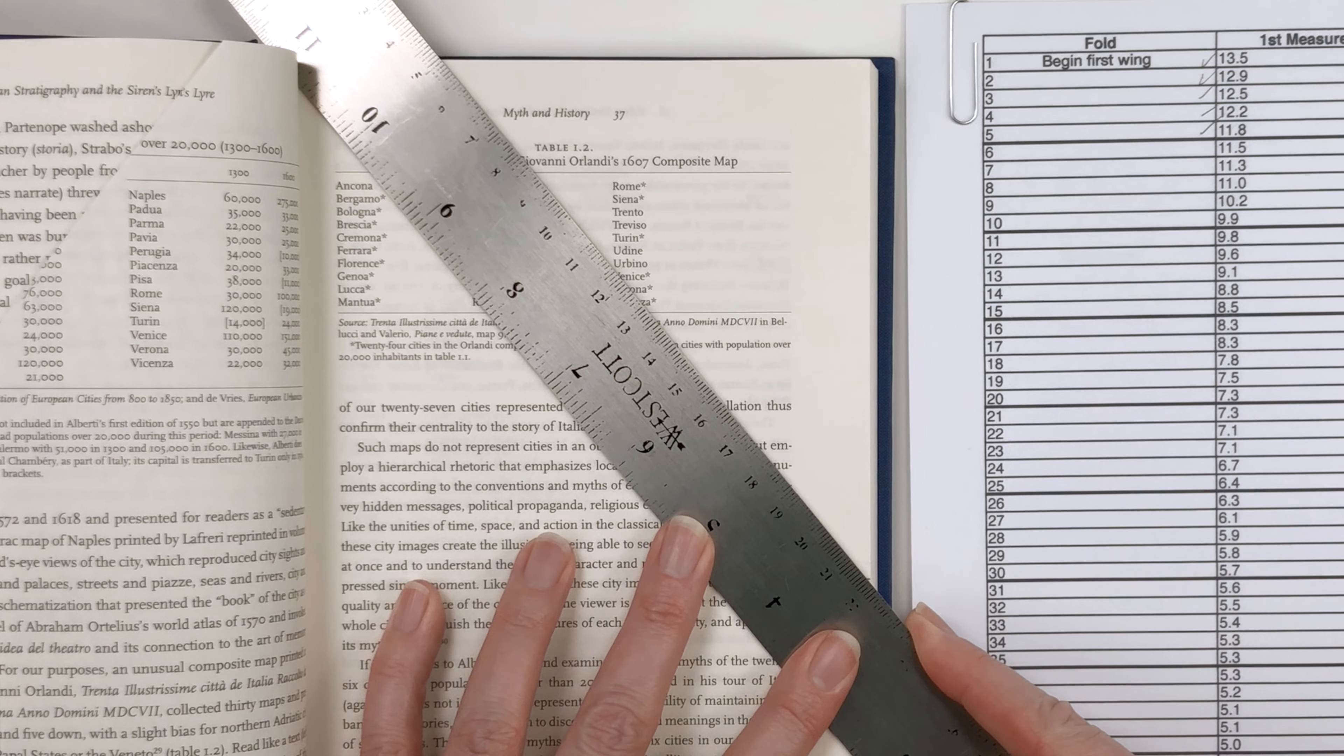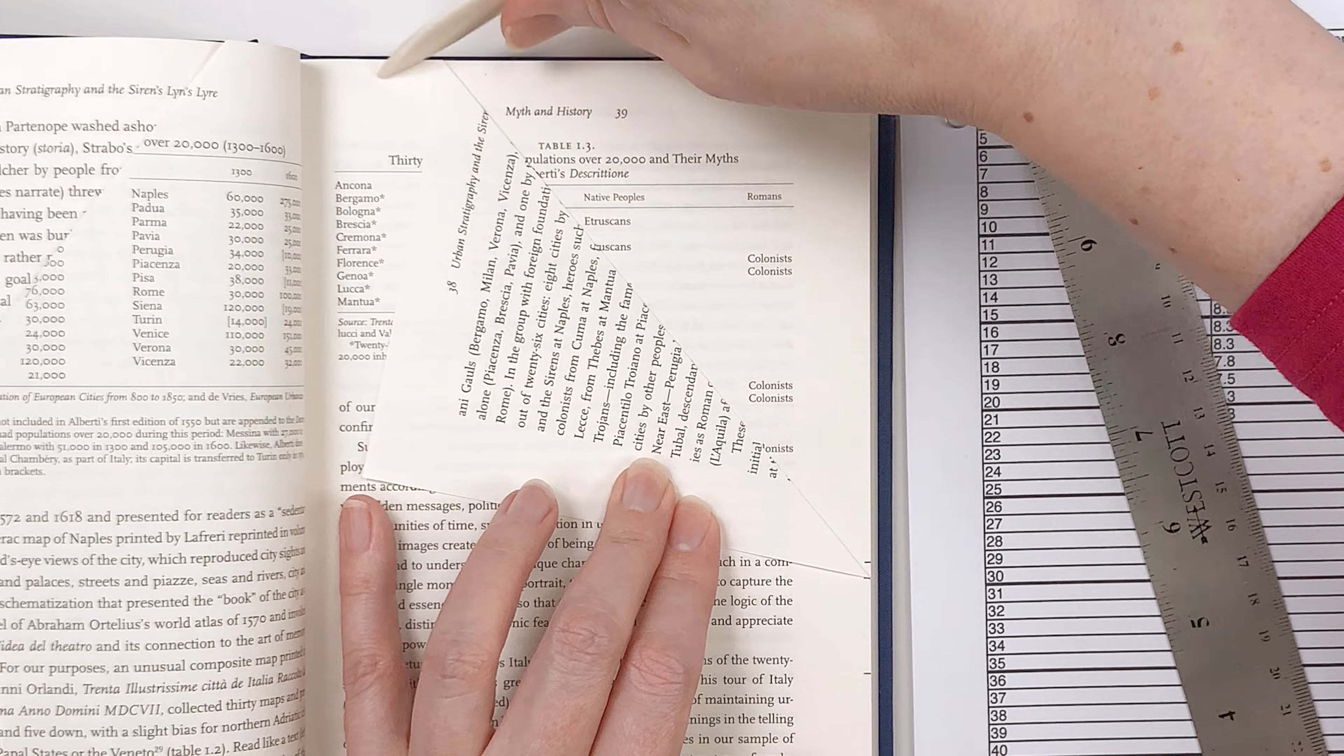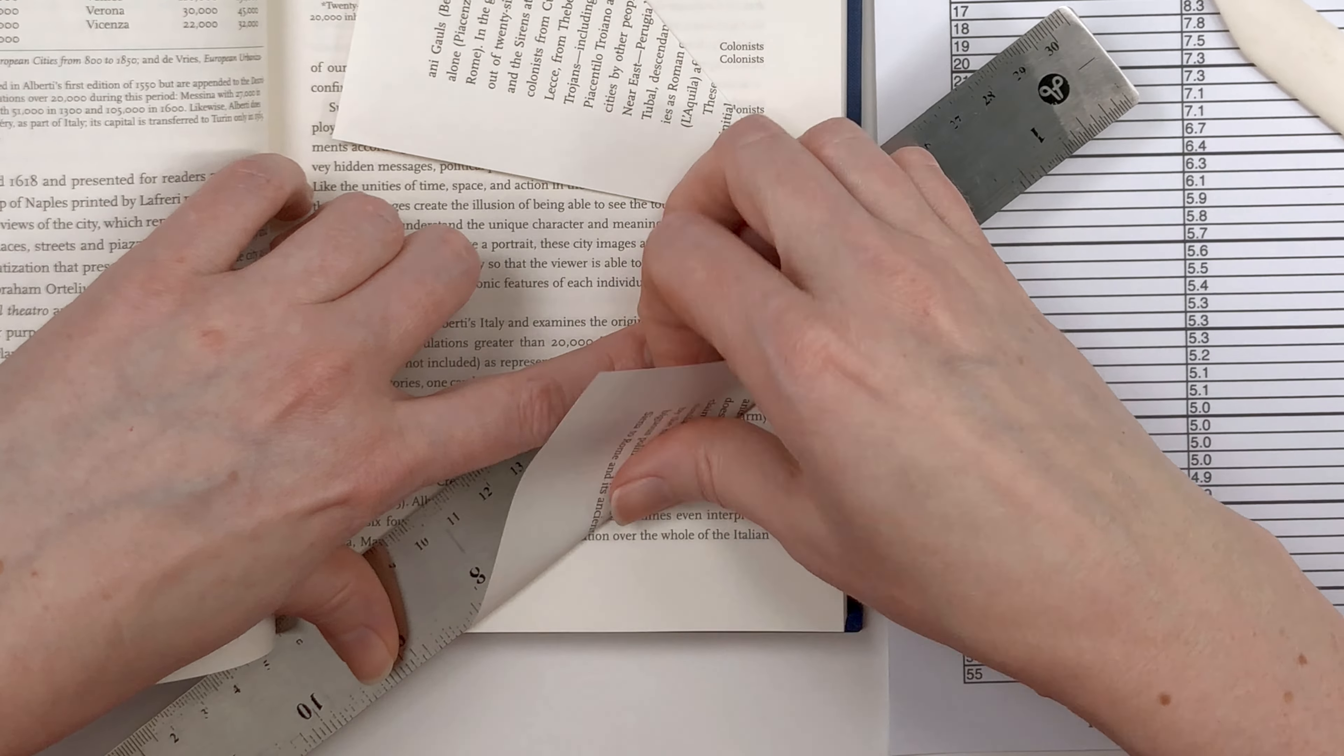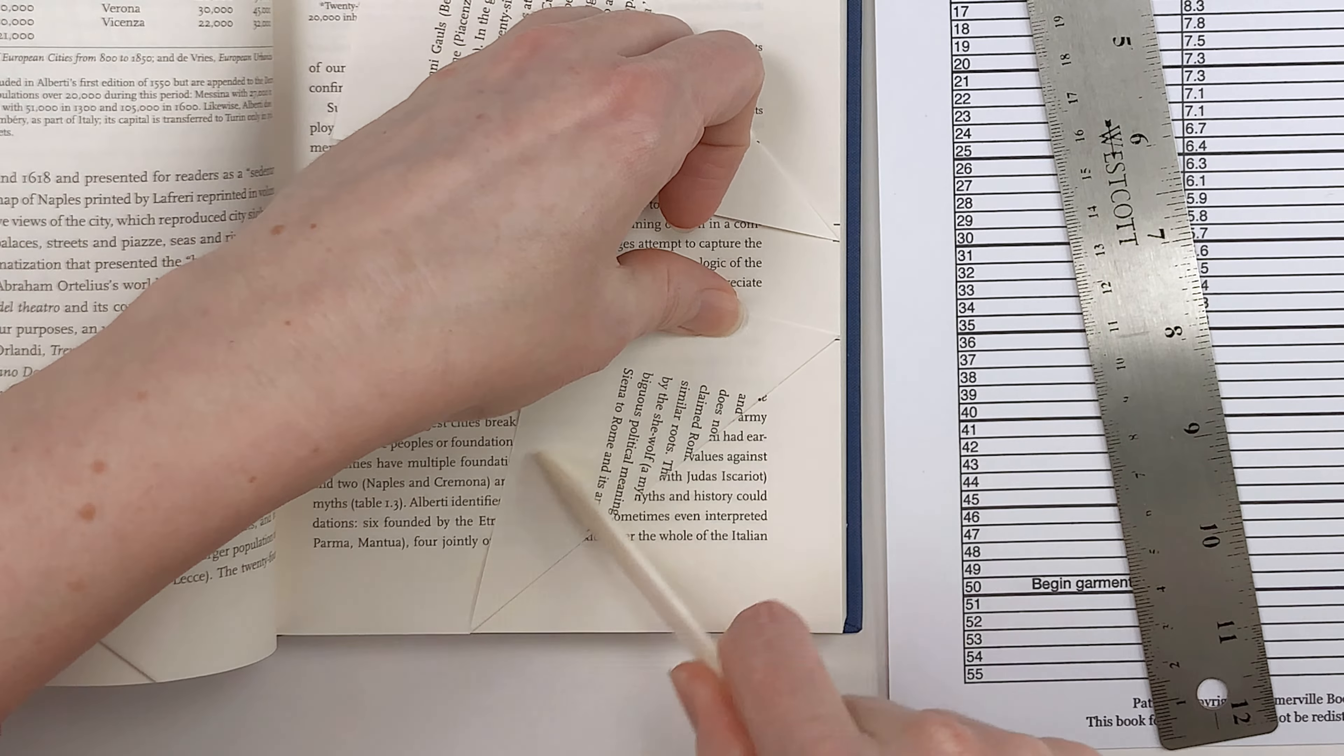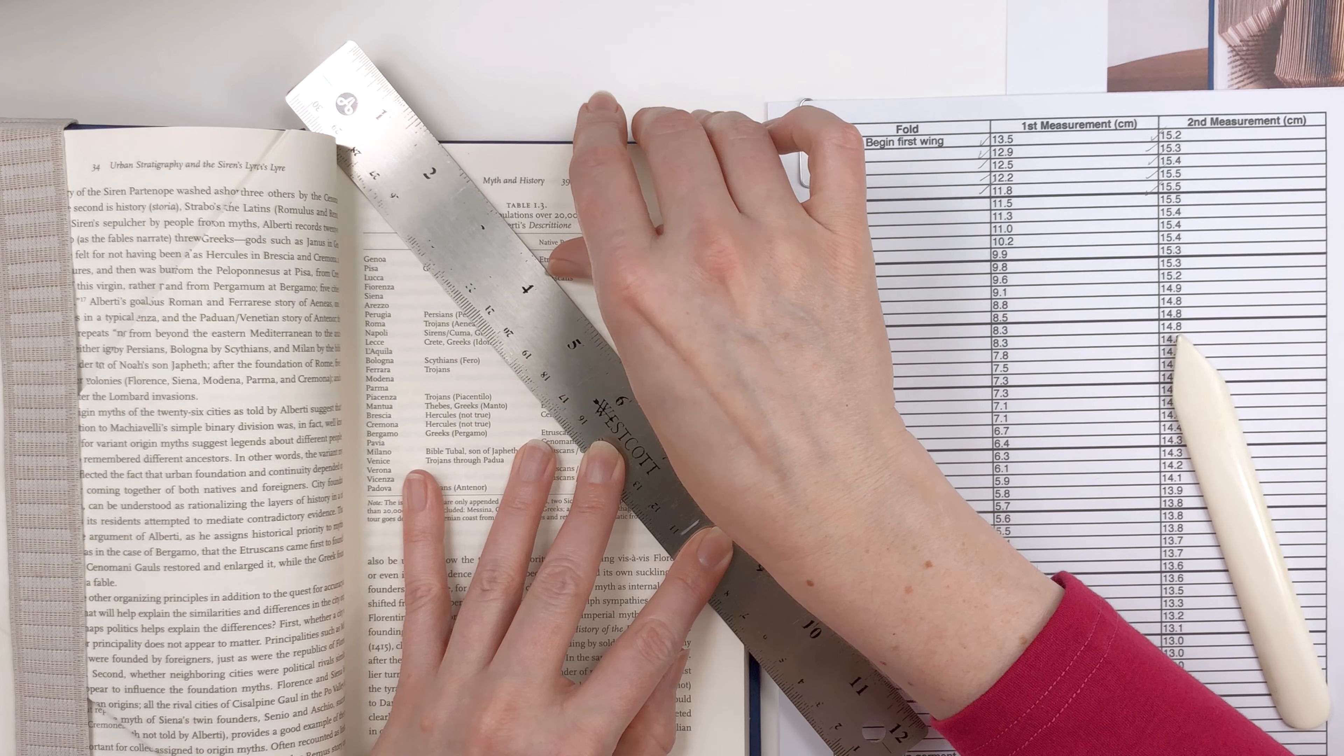So tuck that under. Fold number two, measurements of 12.9 and 15.3. Fold number three, 12.5 and 15.3.